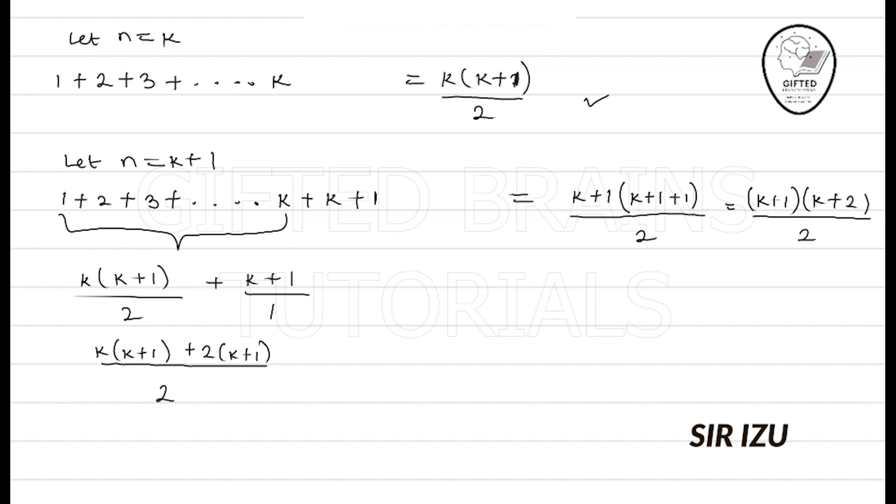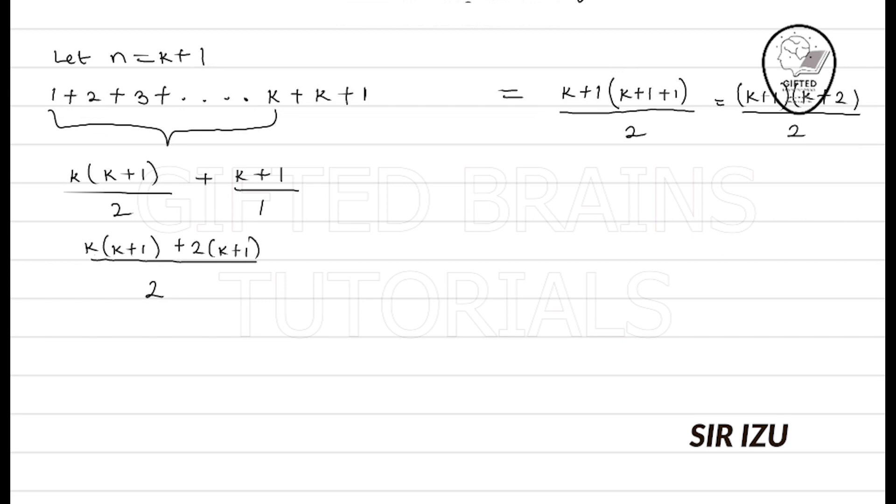We can factorize. In both brackets, something is common: k plus 1. If I factorize k plus 1 out, what's left on one part is k, and what's left on the other part is 2, giving us k plus 1 times k plus 2 over 2. I've made my left-hand side equal the right-hand side. Proved. We'll take example 2 now.